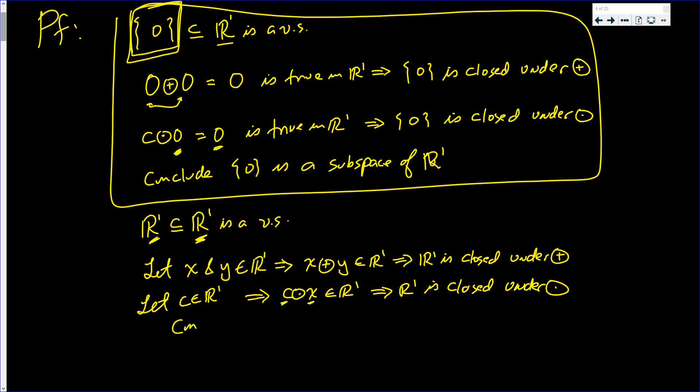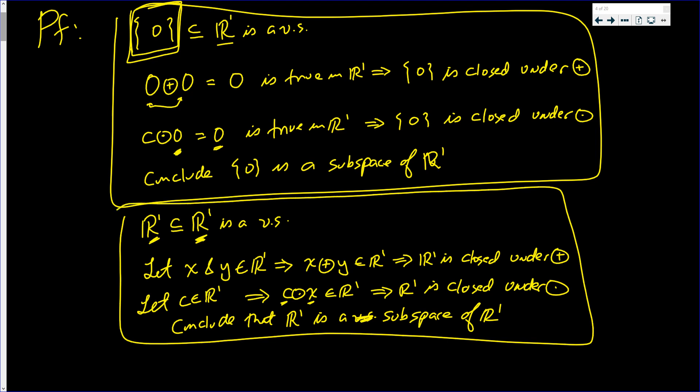So again, we conclude that R1 is a vector space, is a subspace, is a subspace of itself. And that's always true. If V is a vector space, then V is a subspace of V.